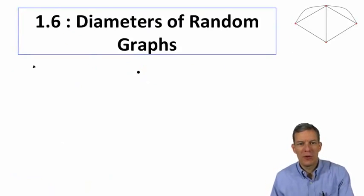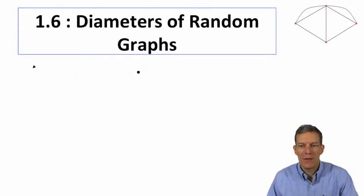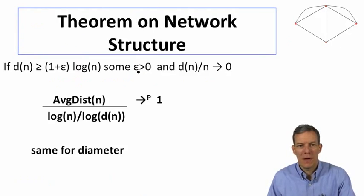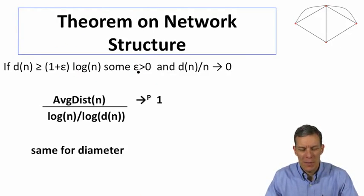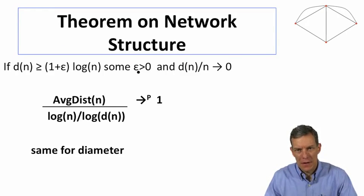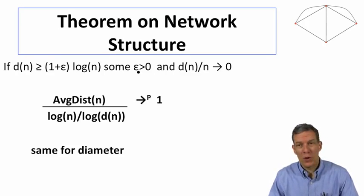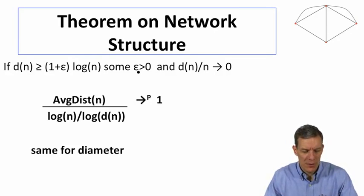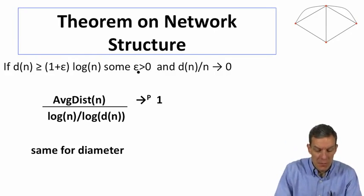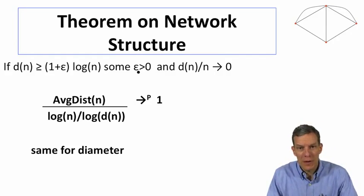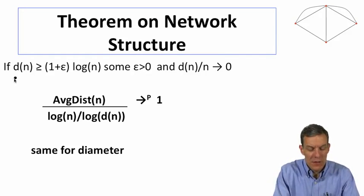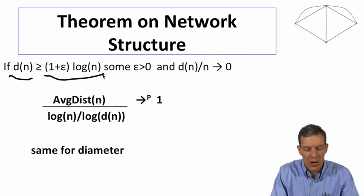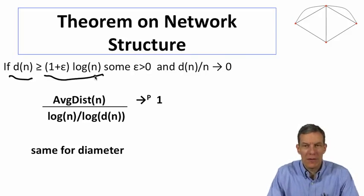Hi folks, so let's take a look at the diameter of random graphs, and in particular, remember we just had a theorem that we stated about the structure of a random graph, in particular these Erdos-Renyi GNP graphs, and these are also known as Bernoulli random graphs, Poisson random graphs. If you recall the basic statement of the theorem, it was that if the degree was growing at least with the log of n, so 1 plus epsilon times log n.